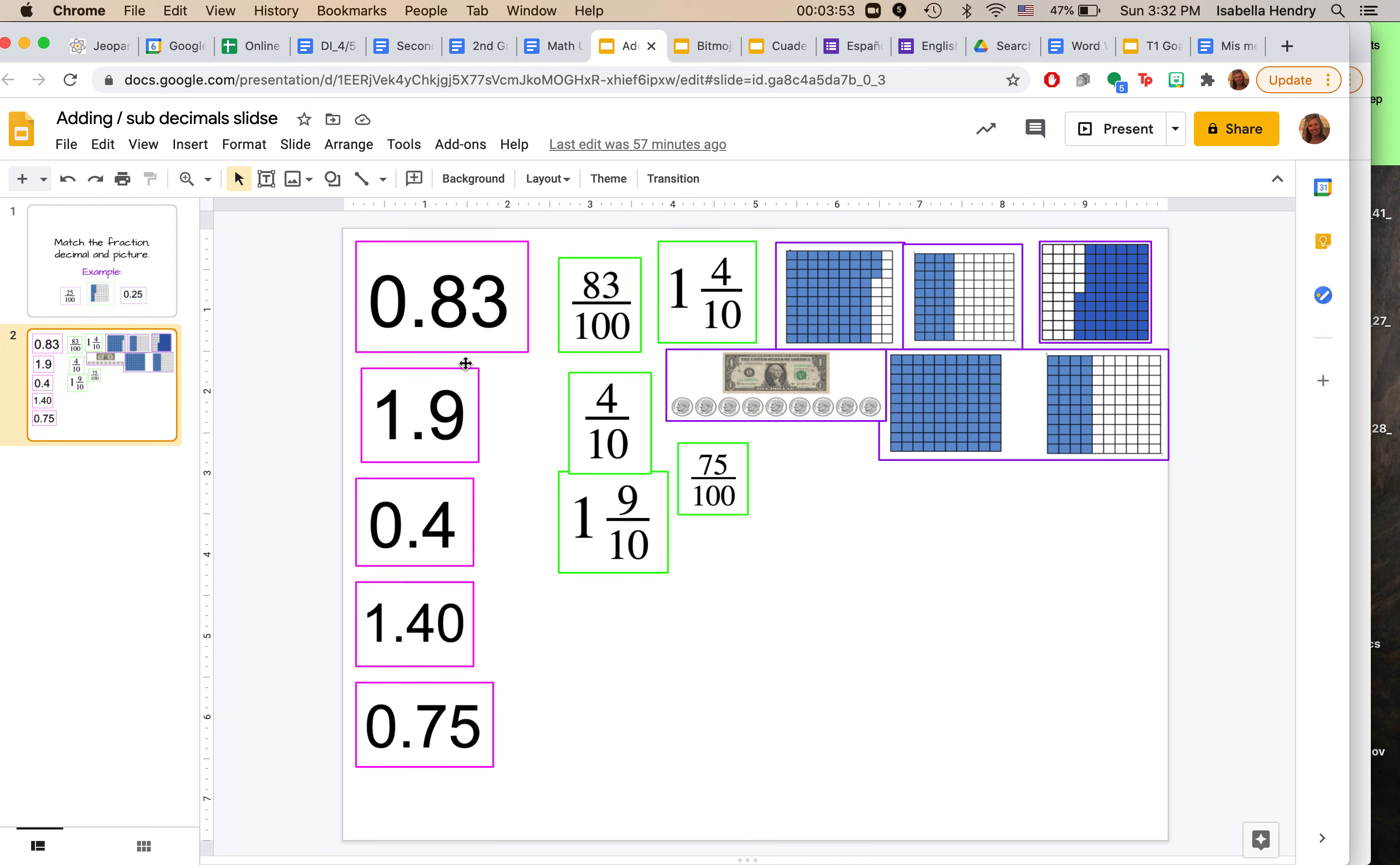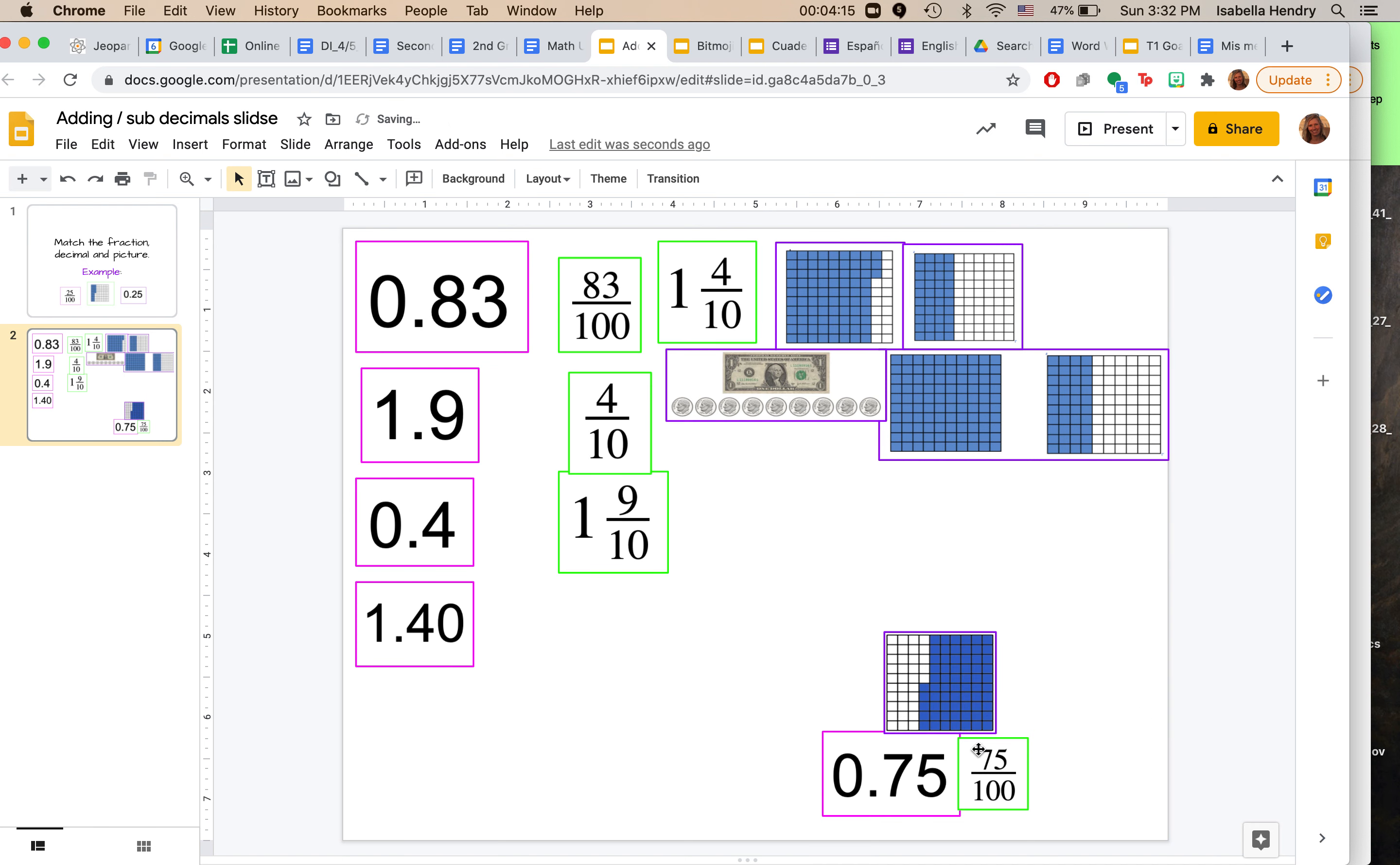So when you're doing your homework today, you would look through here and match up the pictures that match. So for example, if I pull this one, 0.75, that's equal to seventy-five hundredths. I look up here and I find my picture of seventy-five hundredths. So those all go together. Your job is to find which pictures, decimals, and fractions go together. Let's get started.